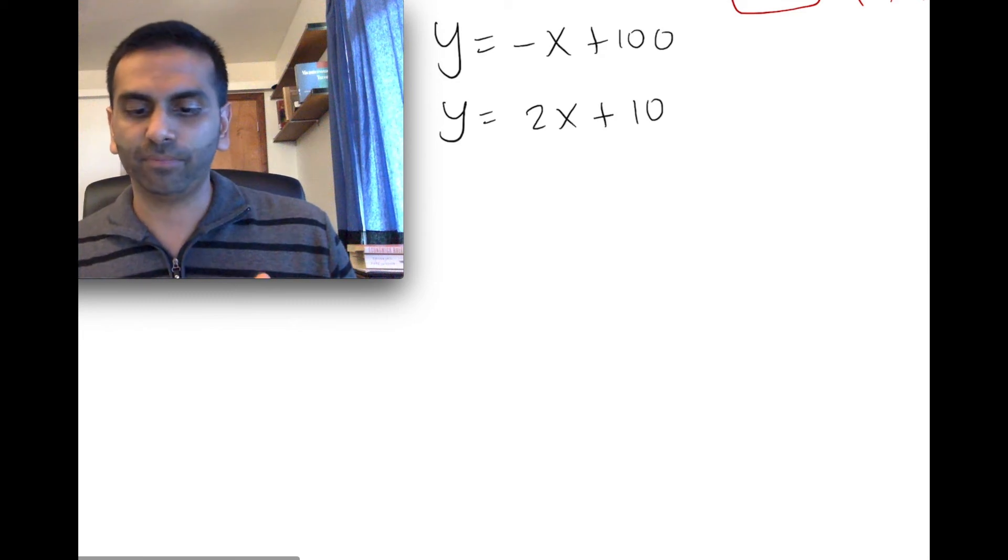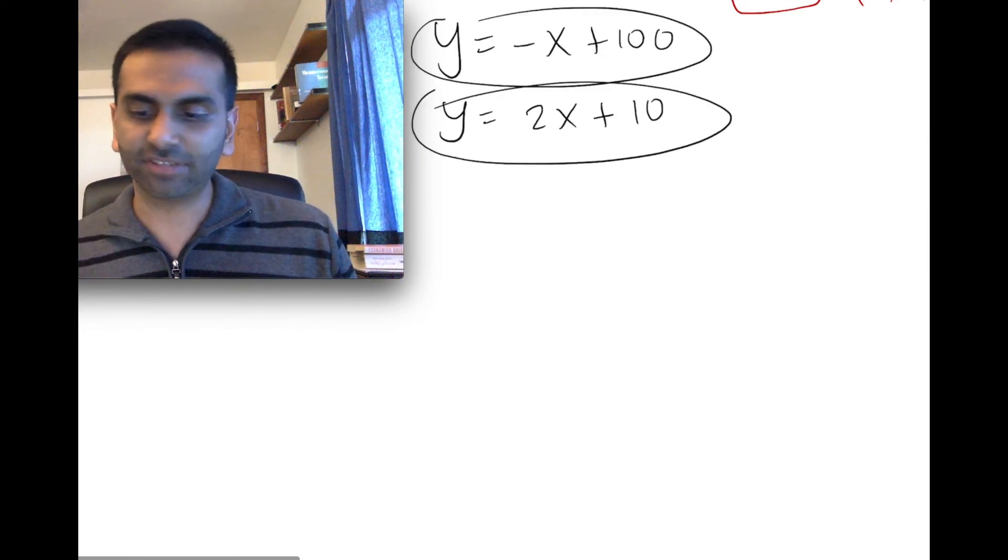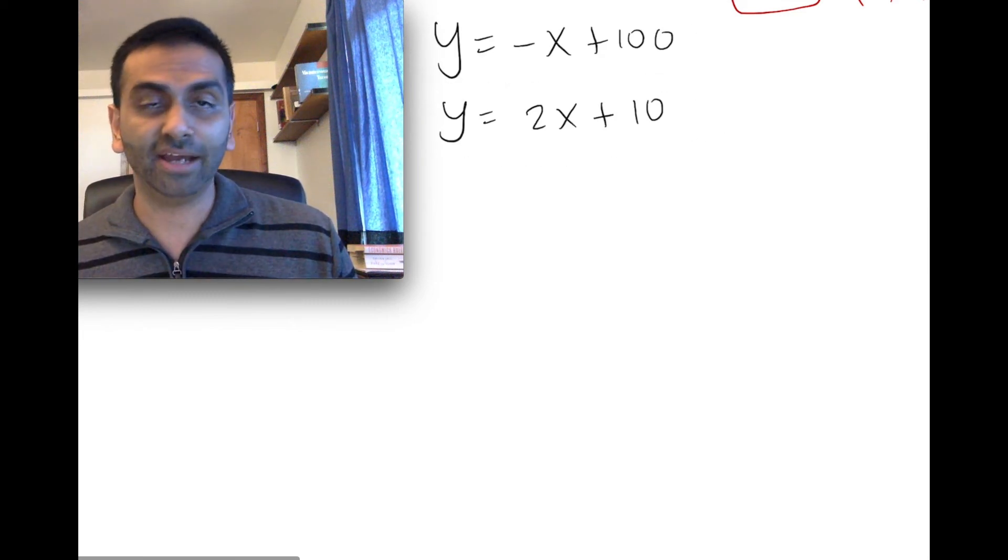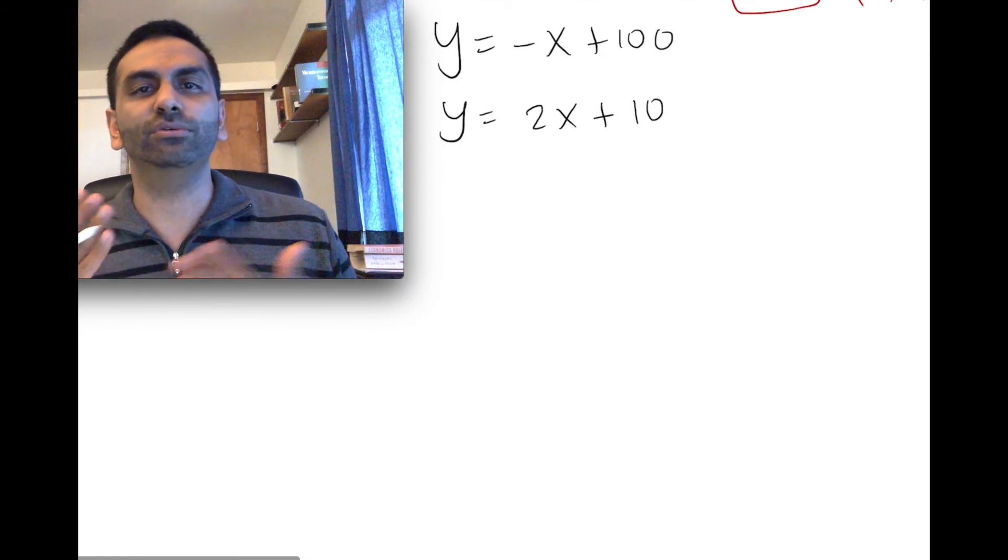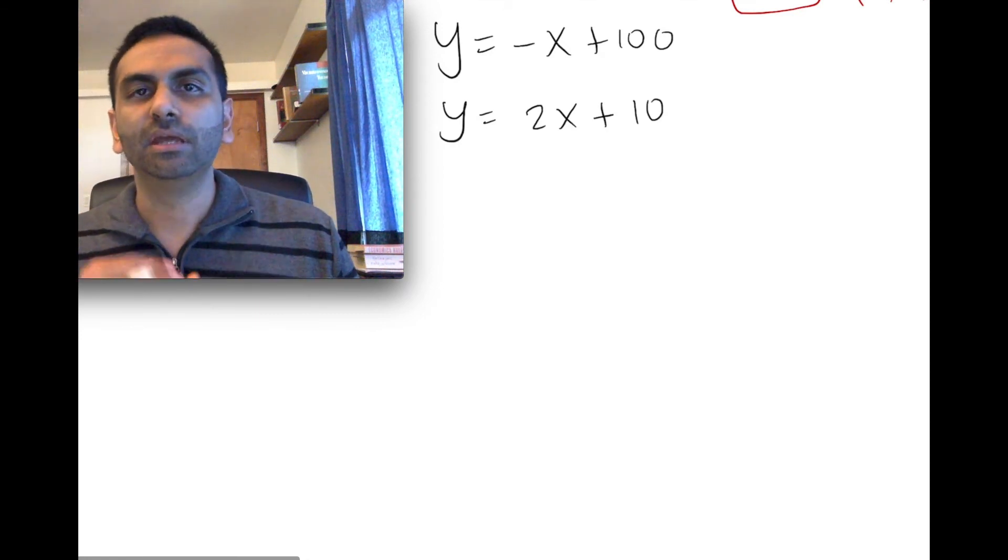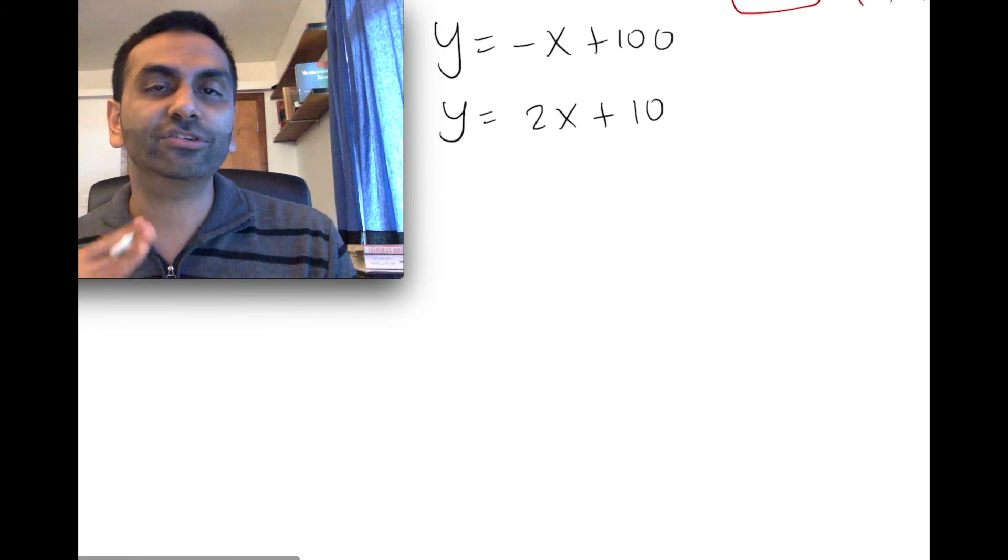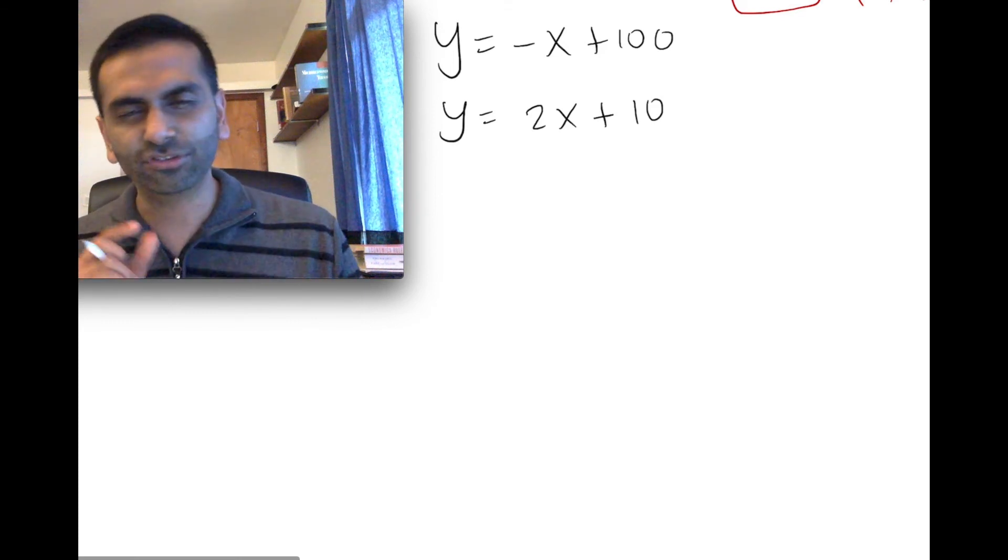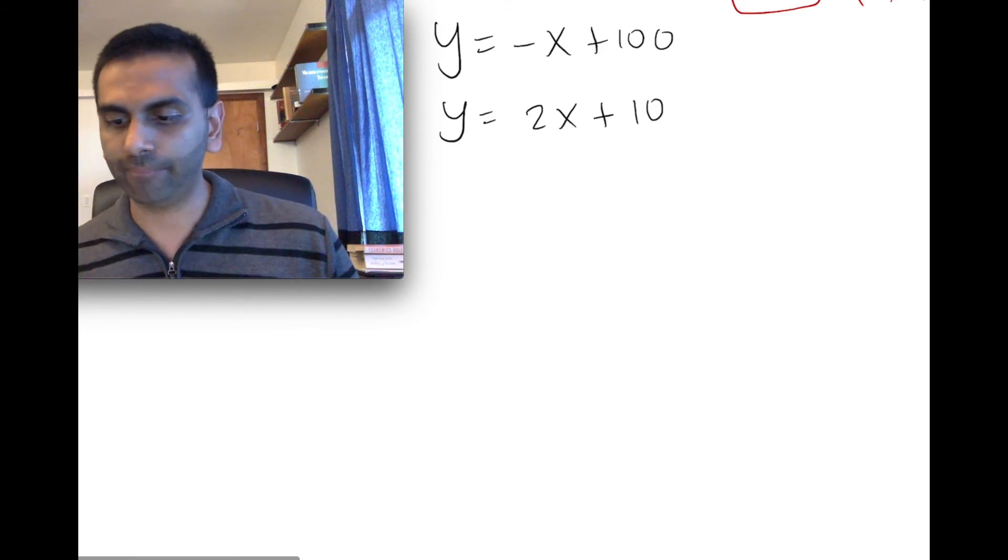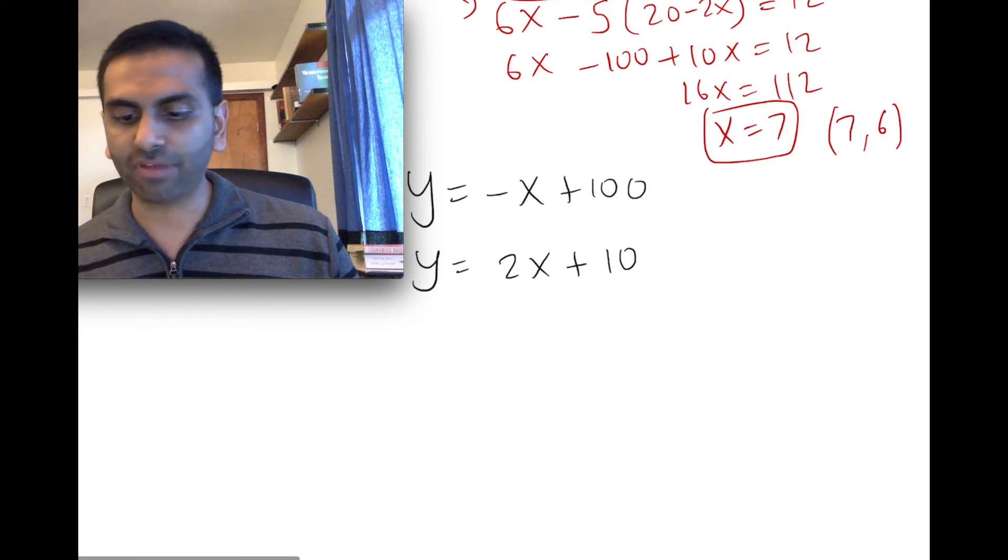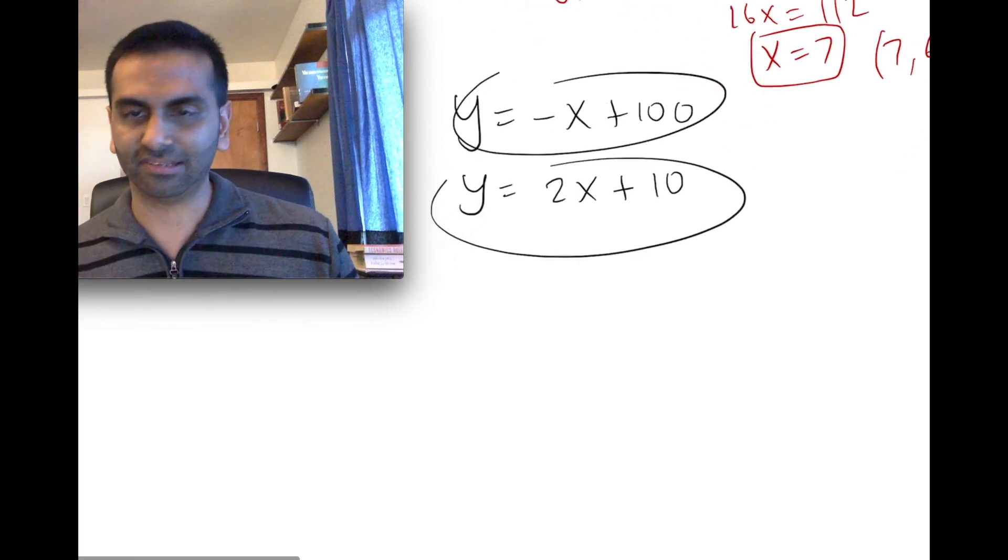So let's do this example. So here, this is easier to see that both these are lines. So what does it mean when you solve for that system? Well, what it means is you're solving for the intersection of those two lines. You're solving for that x, y coordinate point that exists both on this line and on this line.